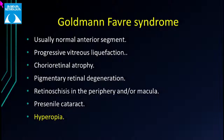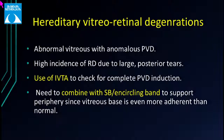In Goldman-Favre syndrome, there is normal anterior segment but progressive vitreous liquefaction, choreoretinal atrophy, pigmentary degeneration, and retinoschisis. Unlike other hereditary vitreoretinal degenerations where myopia is common, these patients are typically hyperopic. Common features across these conditions include abnormal vitreous with anomalous PVD, high rate of liquefaction, high incidence of retinal detachment from large posterior tears, and the use of IVTA to confirm complete PVD induction. If peripheral traction cannot be completely relieved, combining vitrectomy with a scleral buckle is advisable.